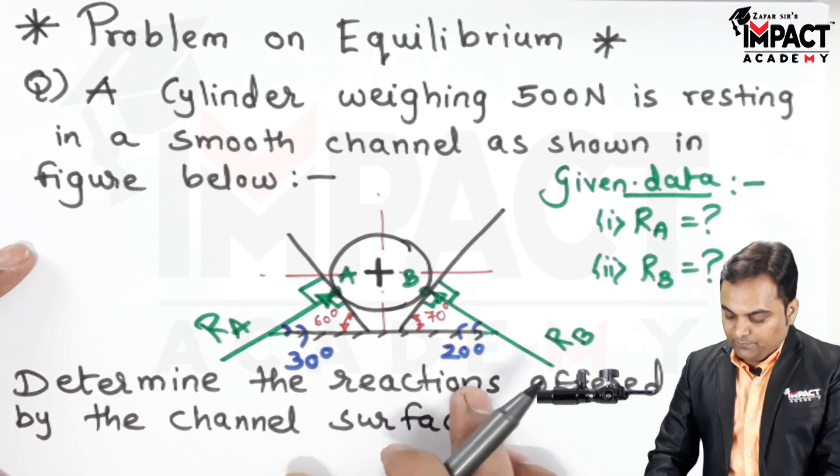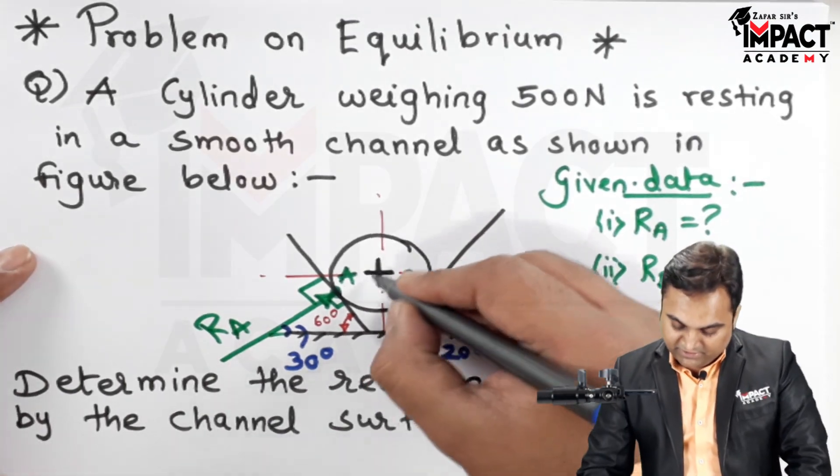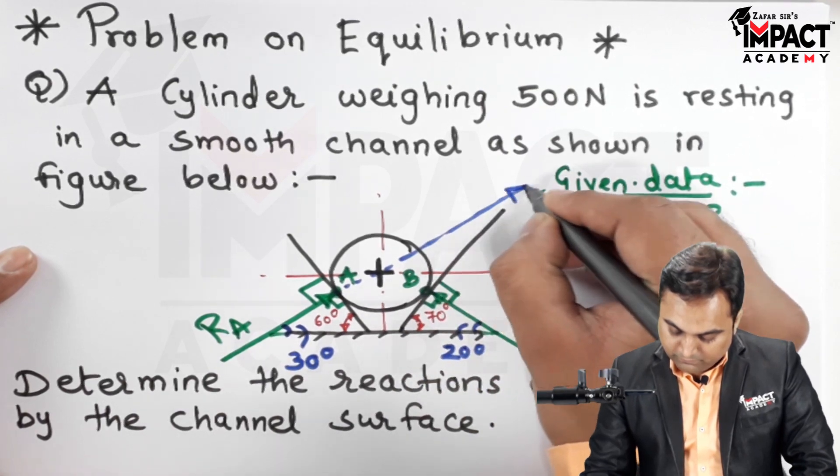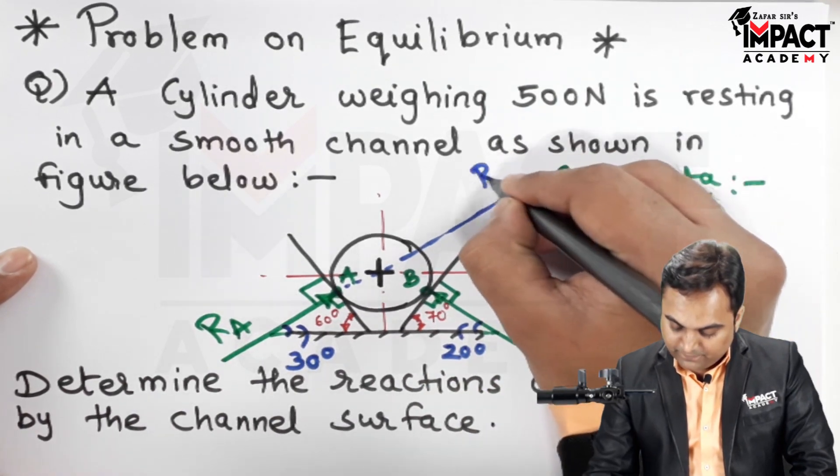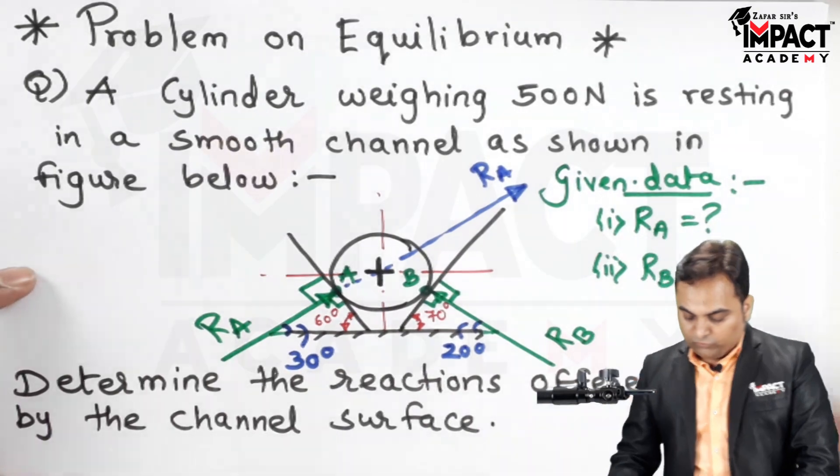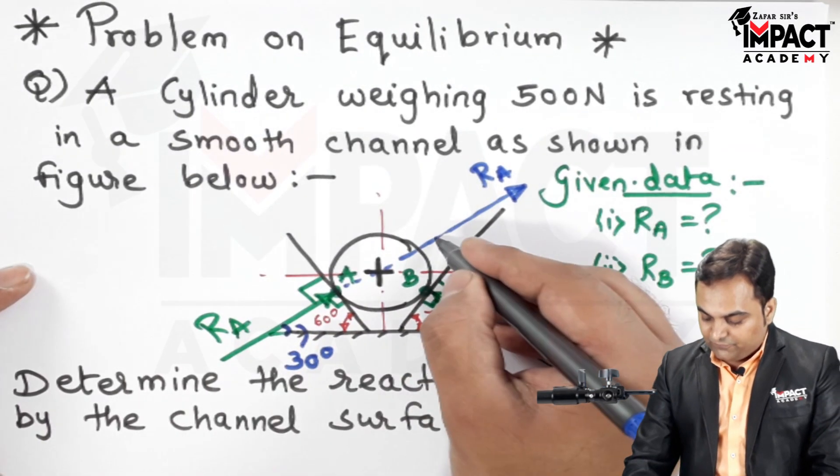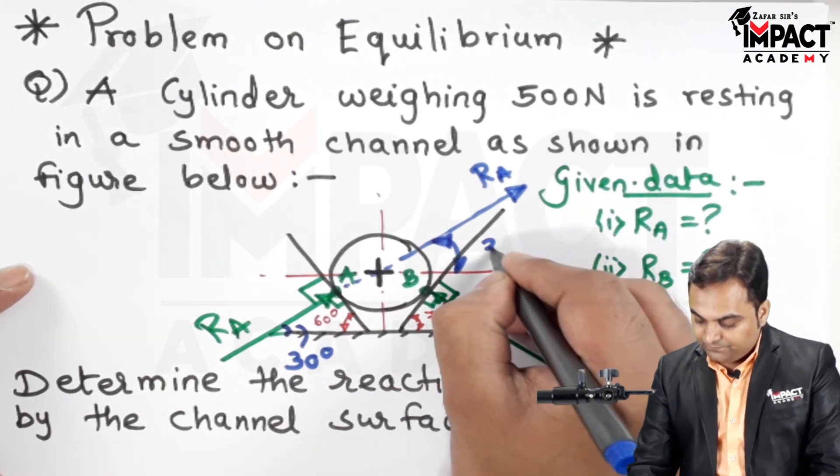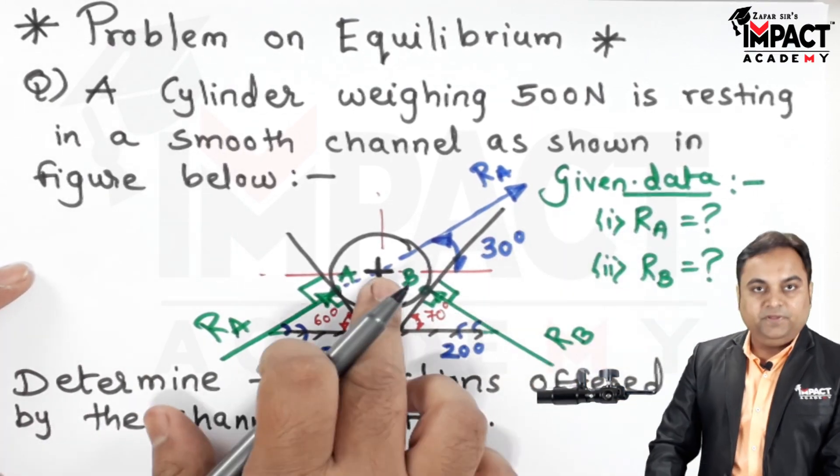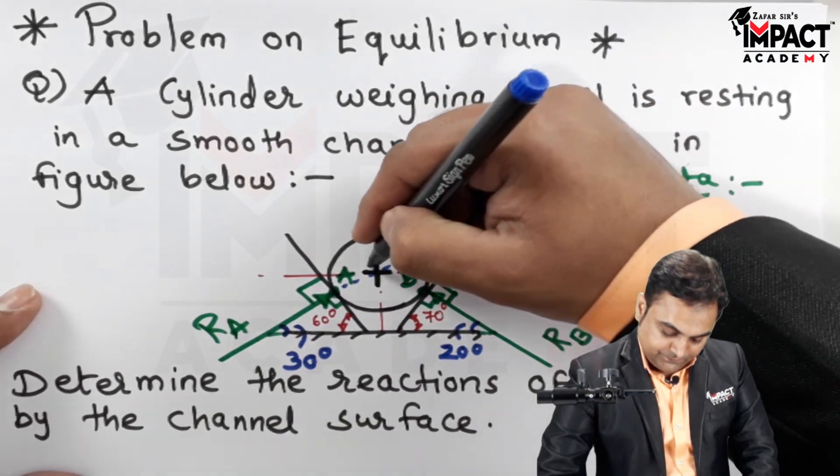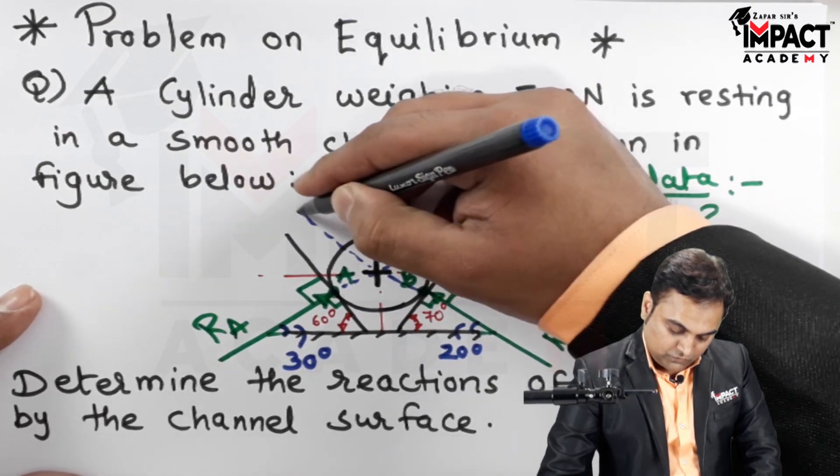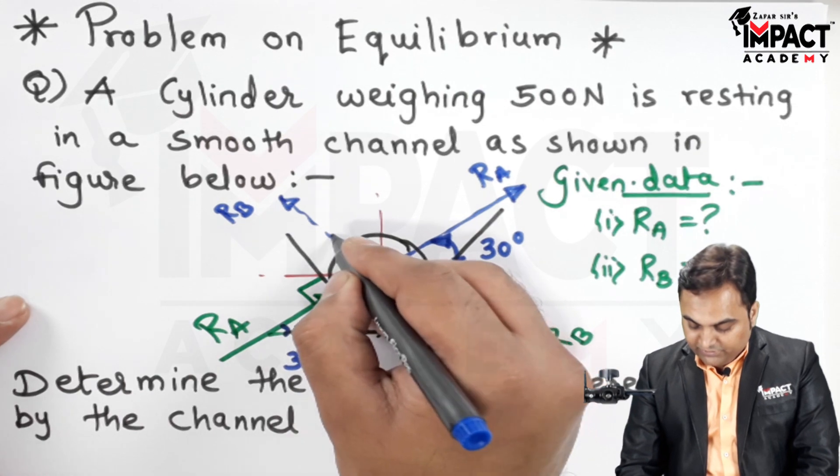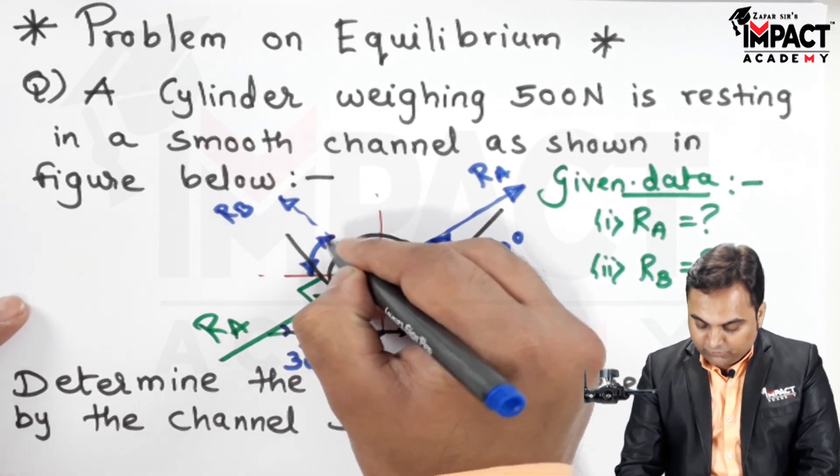So when I am going to extend it, that is RA would be extended onto the other side by law of transmissibility. So the angle made by RA with respect to the horizontal is 30 degree and RB would be extended also having an angle of 20 degree with respect to the horizontal.